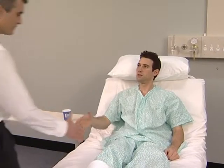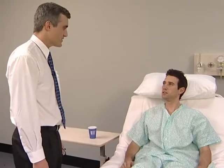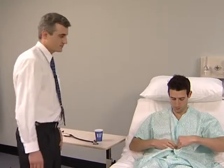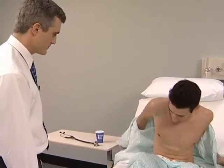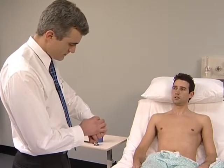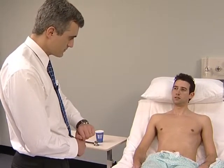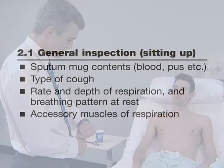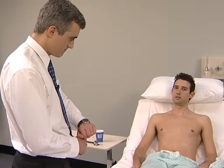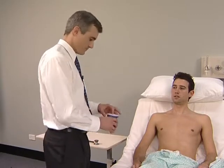For the respiratory system examination, the patient should sit up in bed undressed to the waist. The general inspection should begin as the patient enters the room or begins undressing. The examiner stands back to look for signs of dyspnea, the rate and depth of respiration, and the use of the accessory muscles of respiration.